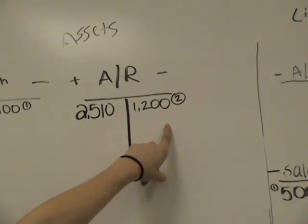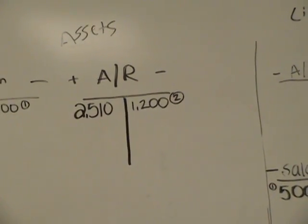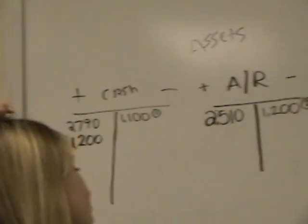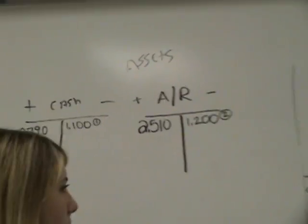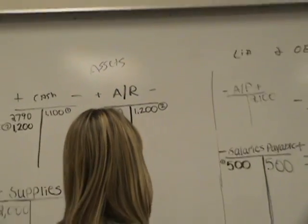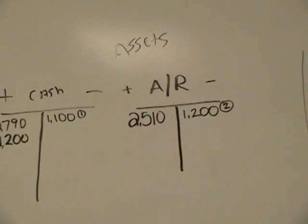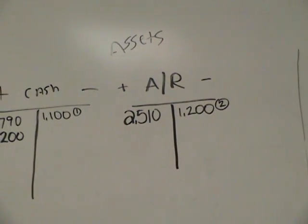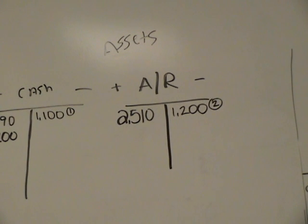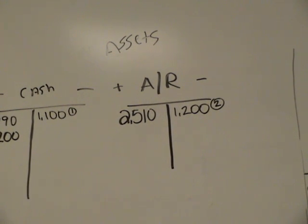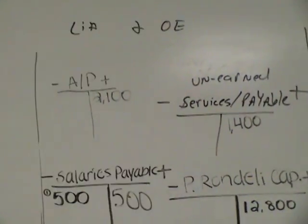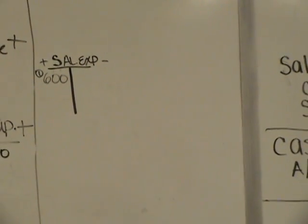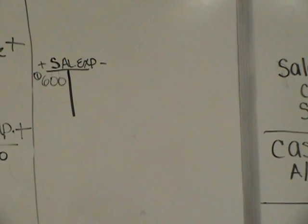Okay, so now we've posted entry two to accounts receivable and to cash, and we're ready for entry three. When you do this at home, use one page for assets, one page for liabilities and owner's equity, and one page for revenues and expenses. We'll get to revenue and expense in a minute.